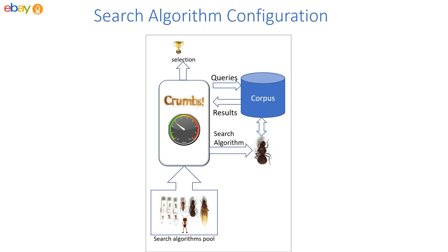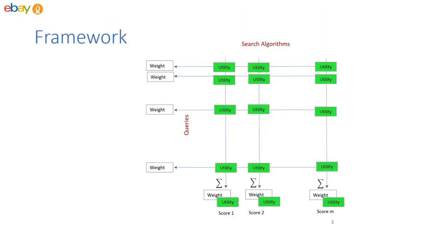On the other hand, existing autoconfiguration methods require relevance labels to train supervised autoconfiguration models. Yet, such labels are not always available to developers. We propose an unsupervised automatic search engine algorithm configuration solution based on query performance prediction.